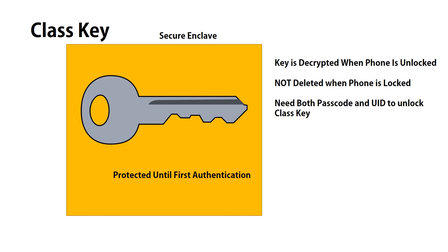With protected until first authentication, the key is decrypted when the phone is unlocked — typically when you first turn it on. And the decrypted keys are not deleted when you lock your phone; they're only deleted when you restart the phone.